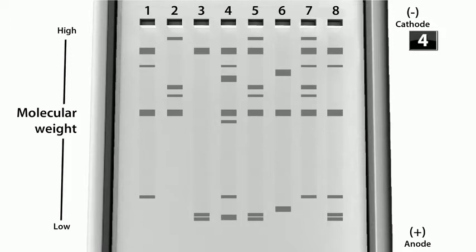Here we have eight wells across the top numbered one through eight. And you apply the current and the negatively charged DNA fragments start moving down from top to bottom. So on the left side of the picture you see that the bigger high molecular weight fragments didn't go very far, but the smaller low molecular weight fragments traveled all the way to the bottom of the gel.